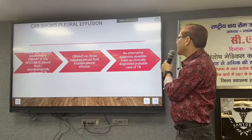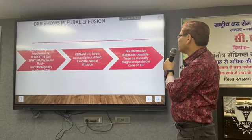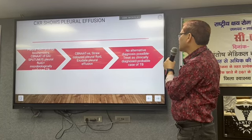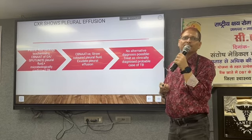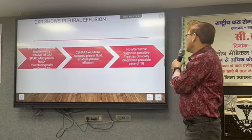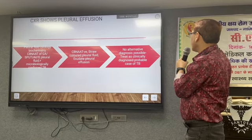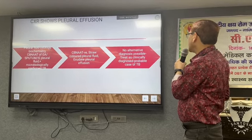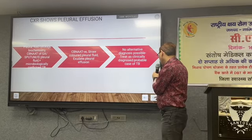If CBNAT of the pleural fluid is negative but the color of the fluid is suggestive and it is an exudative type of pleural effusion, then it is likely tuberculosis — treat accordingly. If no alternative diagnosis is possible, treat as clinically diagnosed tuberculosis in this scenario also.